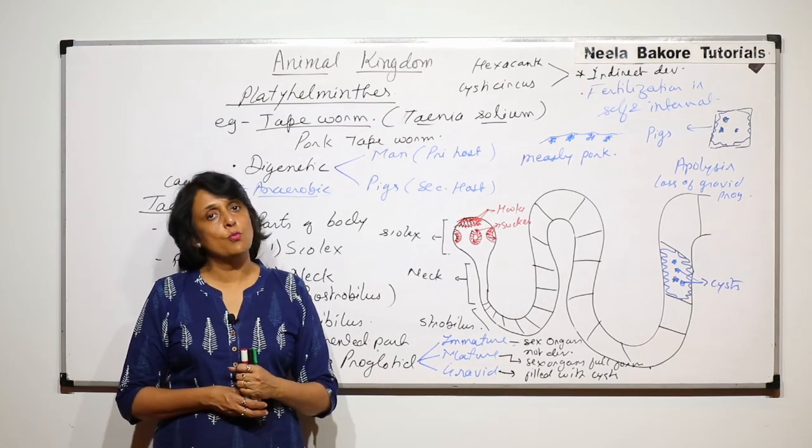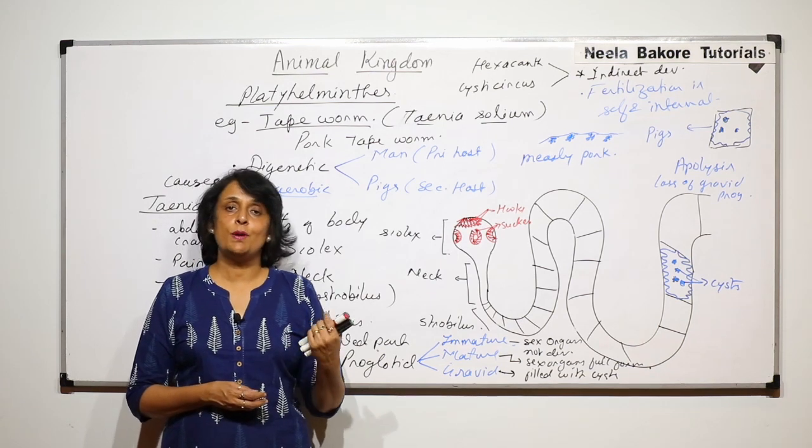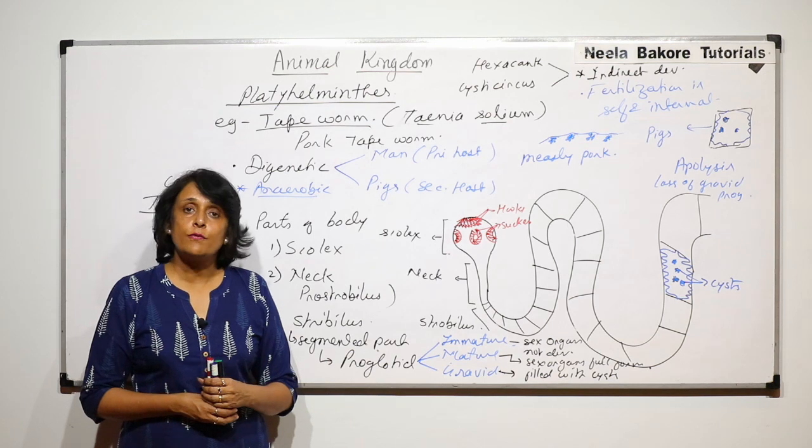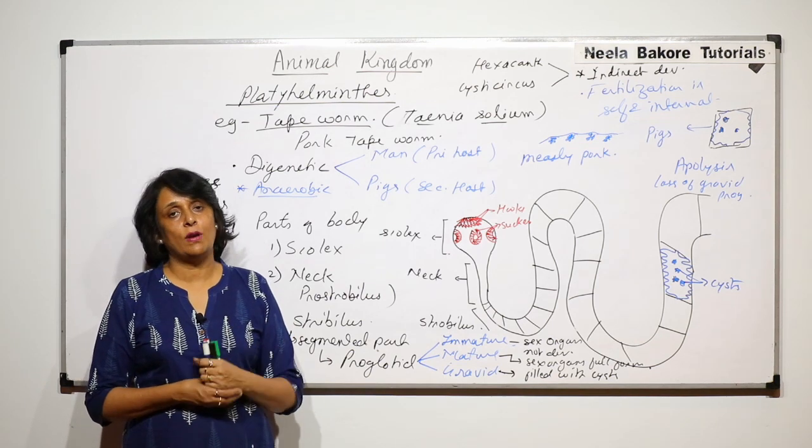In the next part we will take up two more examples. One is going to be a free-living one, that is planaria, and the other is the liver fluke or Fasciola hepatica.